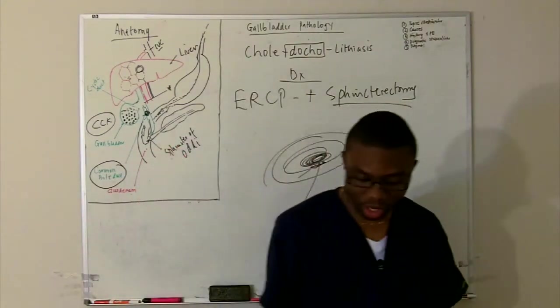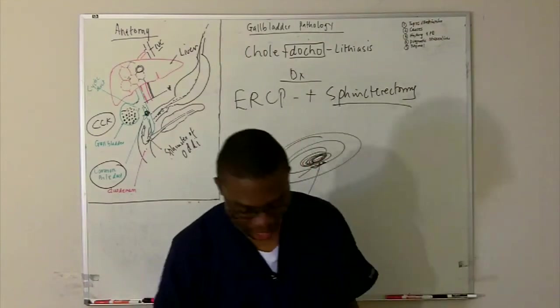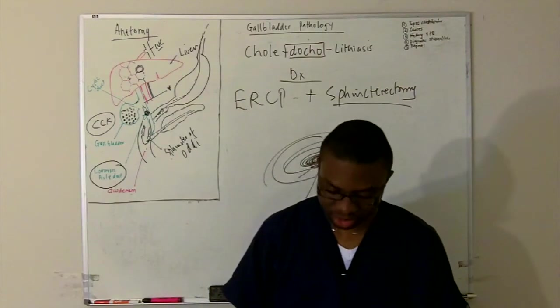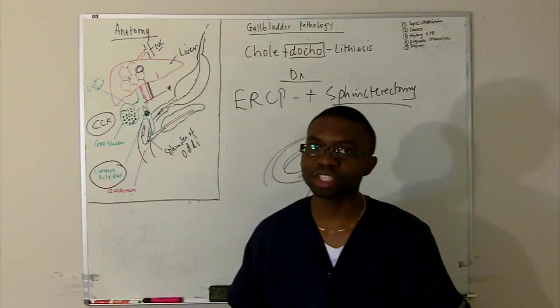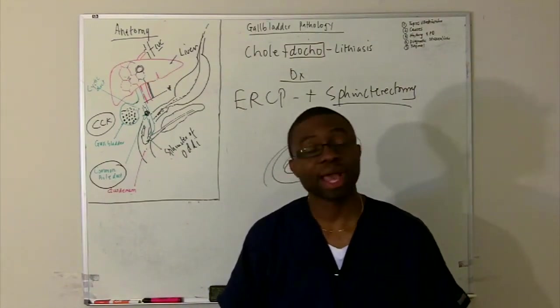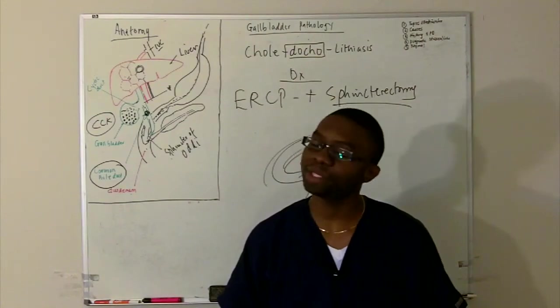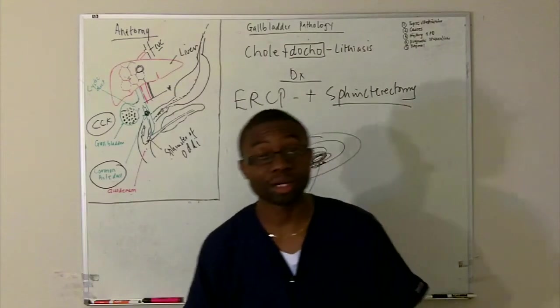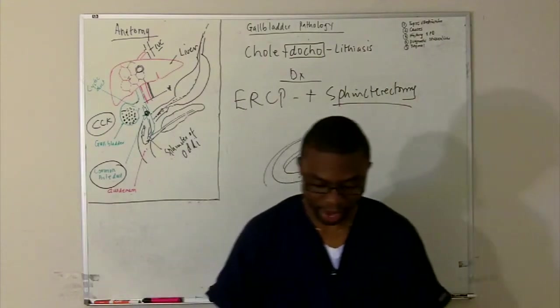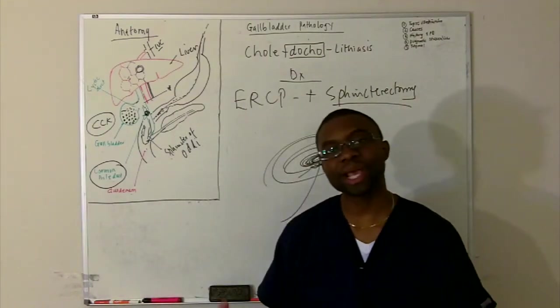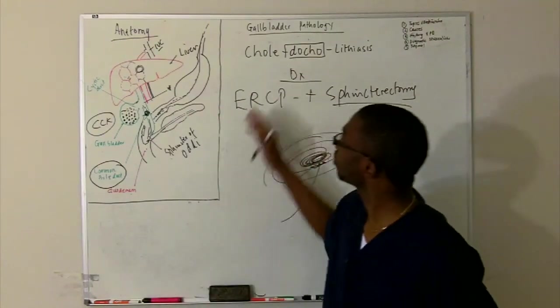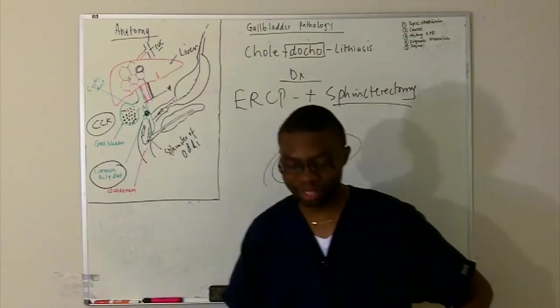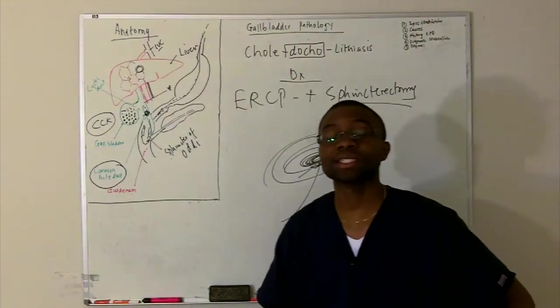You take a scope, you put it in your throat, it goes all the way down, goes into the duodenum, makes a U-turn, goes through the sphincter of Oddi, see the stone, you pluck it out and that's it. Voila, I'm done. If that doesn't work, we can do a laparoscopic choledocholithotomy. But that's usually done in very select cases. ERCP is usually your mode of treatment and you're good to go.